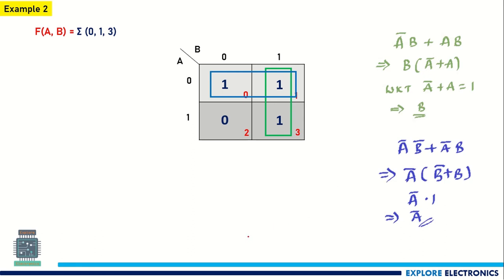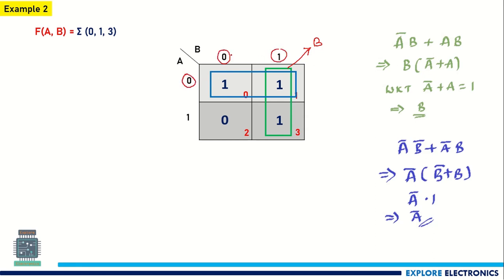Using the simpler method: for the green cell, B is 1 and A changes from 0 to 1 — since A is not constant, we ignore it, giving expression B. For the blue cell, A is 0 so we write A̅, and B changes from 0 to 1 — since B is not constant, we ignore it, giving A̅. Combining both groups, the final expression is A̅ + B.